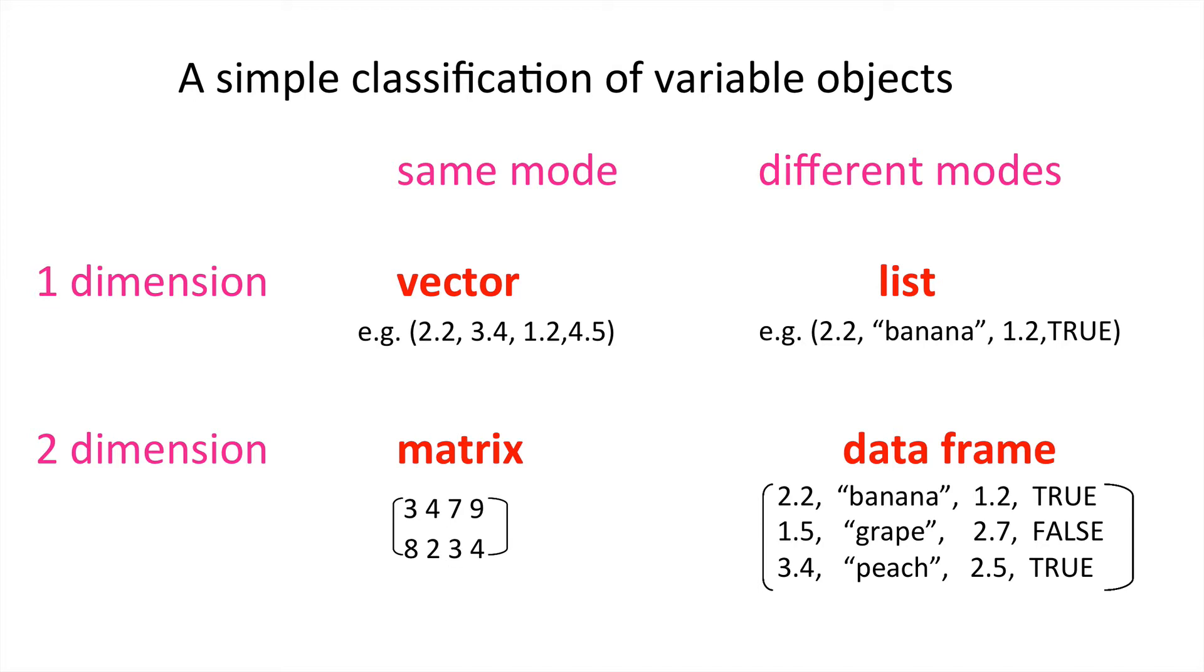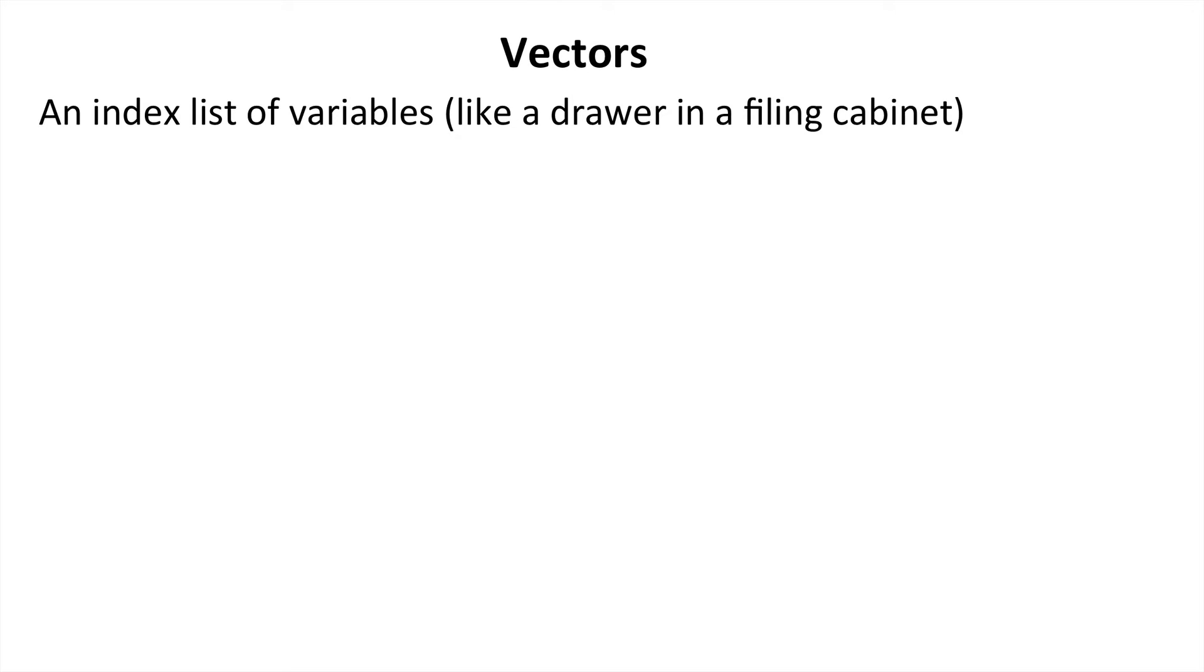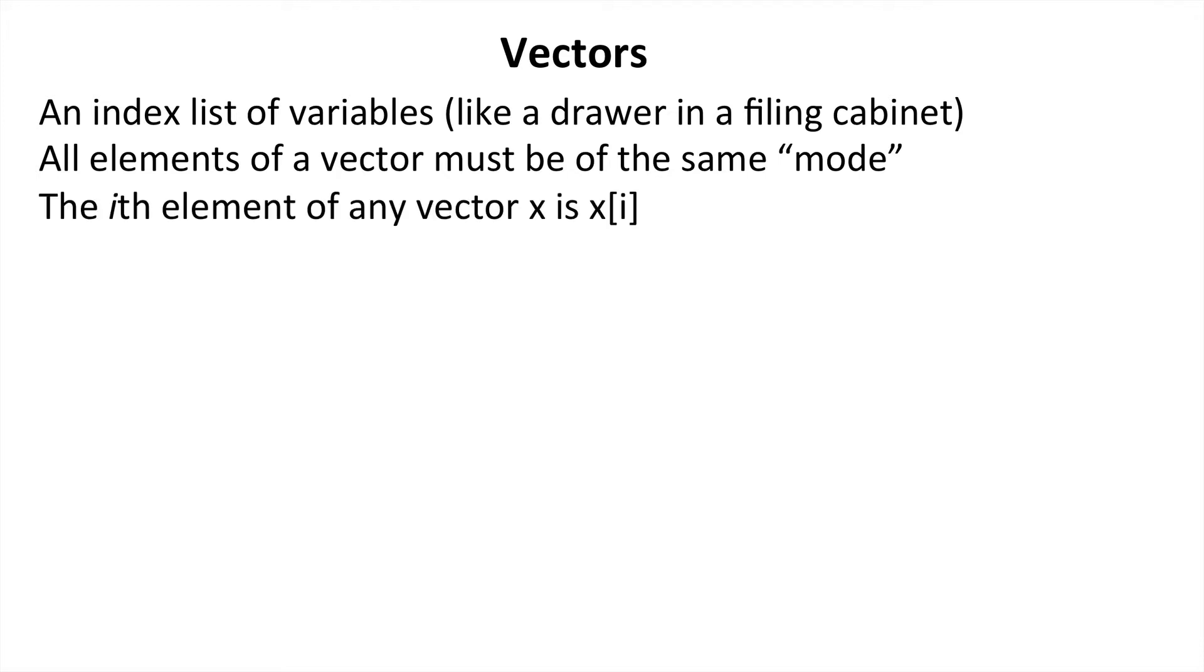But let's go back to vectors. Vectors is an index list of elements, rather like a single drawer in a filing cabinet. All elements of the vector, as I've said, have to be the same mode. And we can refer to the ith element, where i is any number from one up to the number of elements it has, as a variable name and then using square brackets for the i.